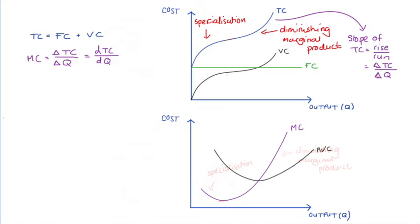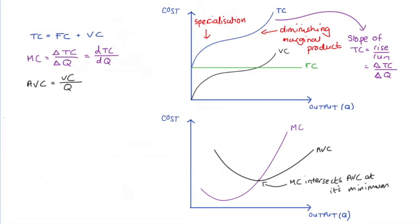Let's look at average variable costs. Average variable cost is variable cost divided by quantity. Our average variable cost curve will behave similarly to marginal costs for the same reasons — it will start off higher and decrease as we enjoy specialization, then become positively sloped due to capacity constraints and diminishing marginal product. One important thing to note is that the marginal cost curve will always intersect the minimum of the average variable cost curve. I have another video explaining this point, linked in the description below.